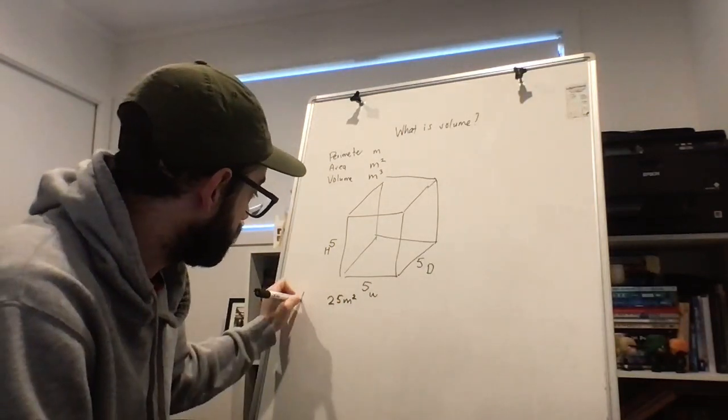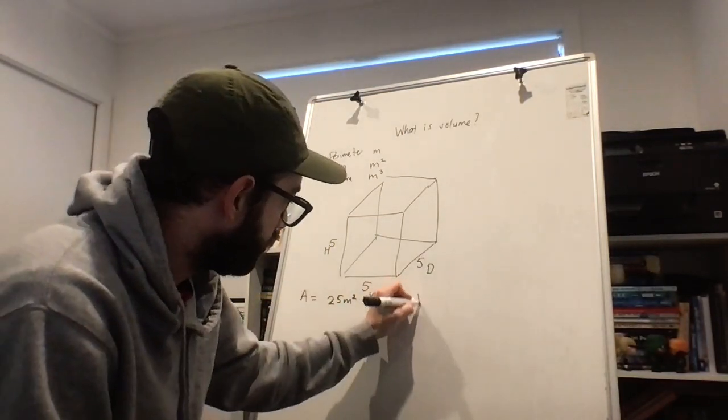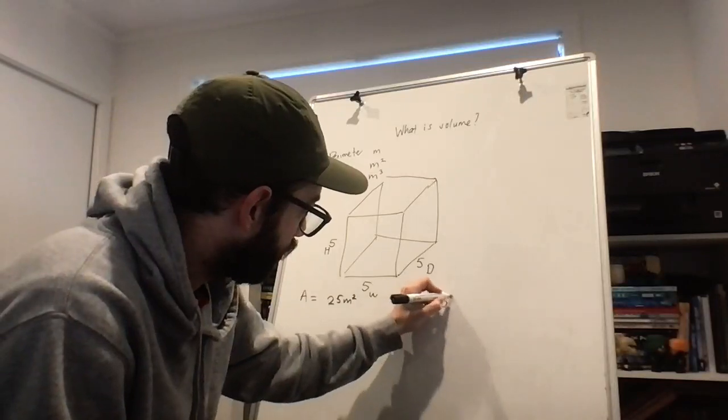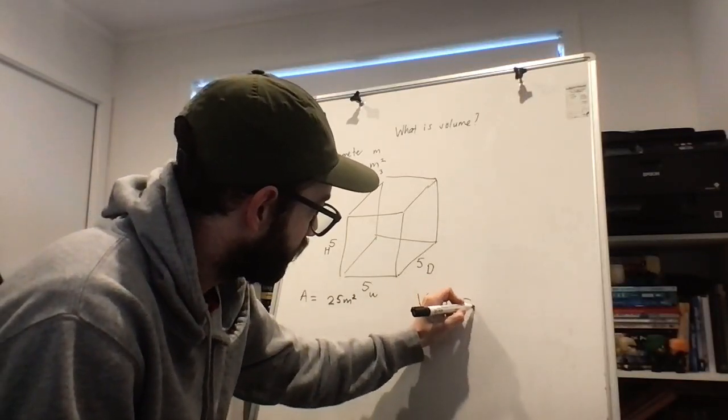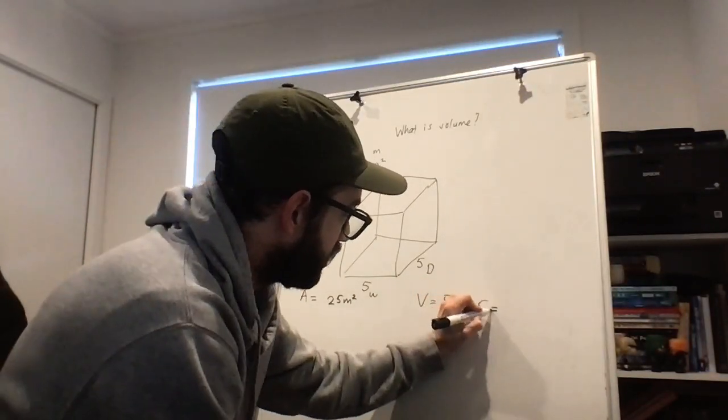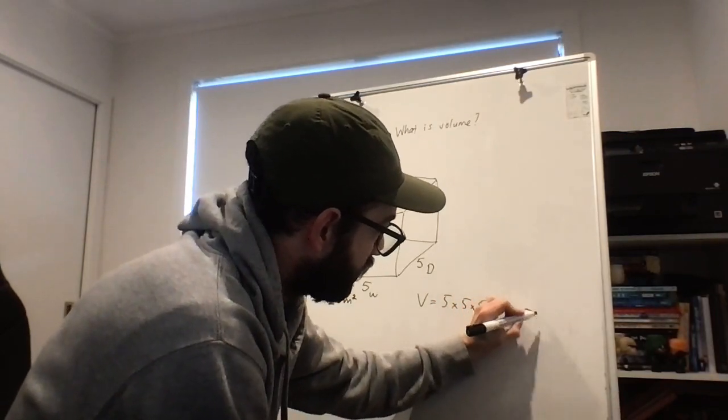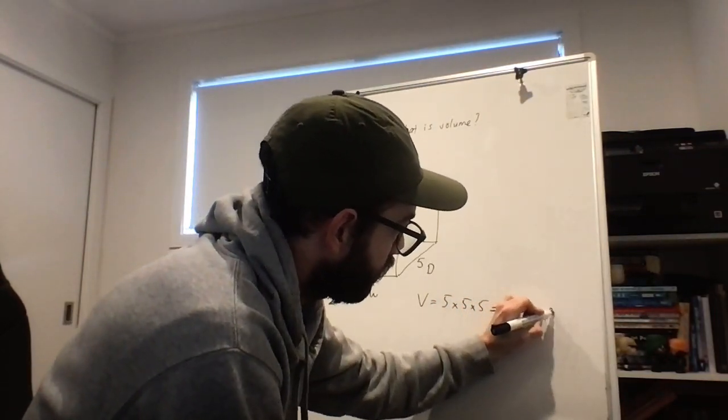So instead of, so this is the area, our volume would be five times five times five, which is 125 meters cubed.